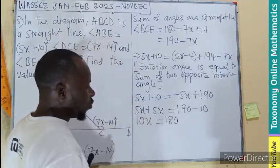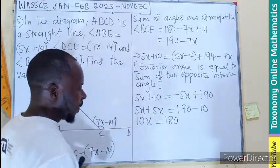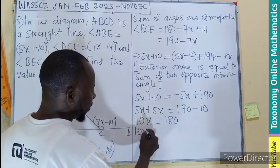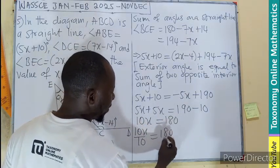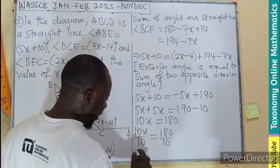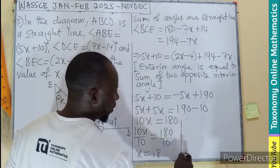What do we do? We divide both sides by 10. That will give you 10x divided by 10, 180 divided by 10. And x will be 18.